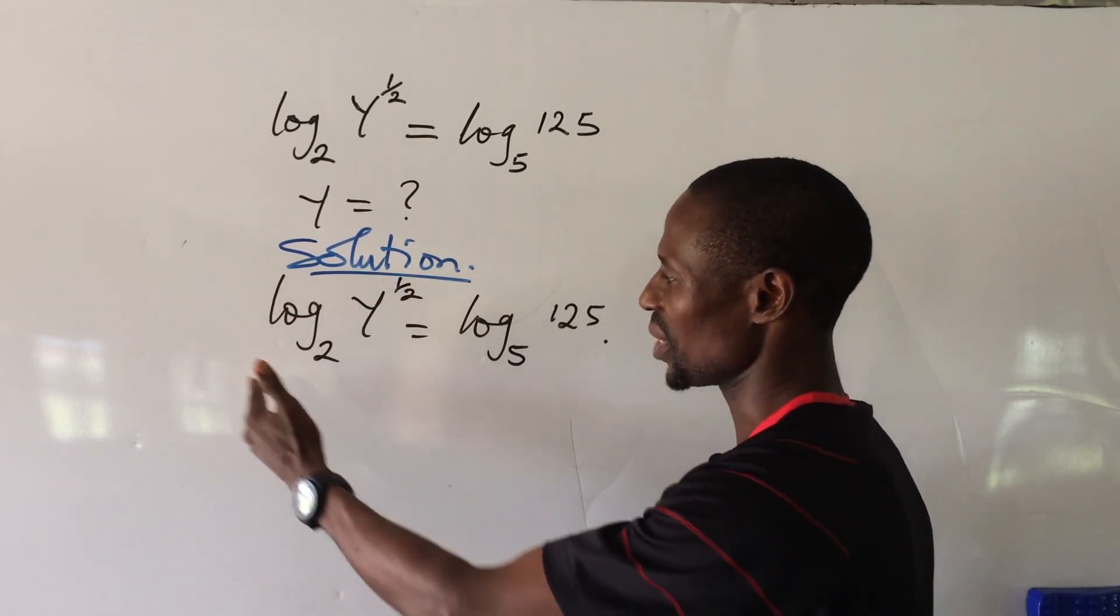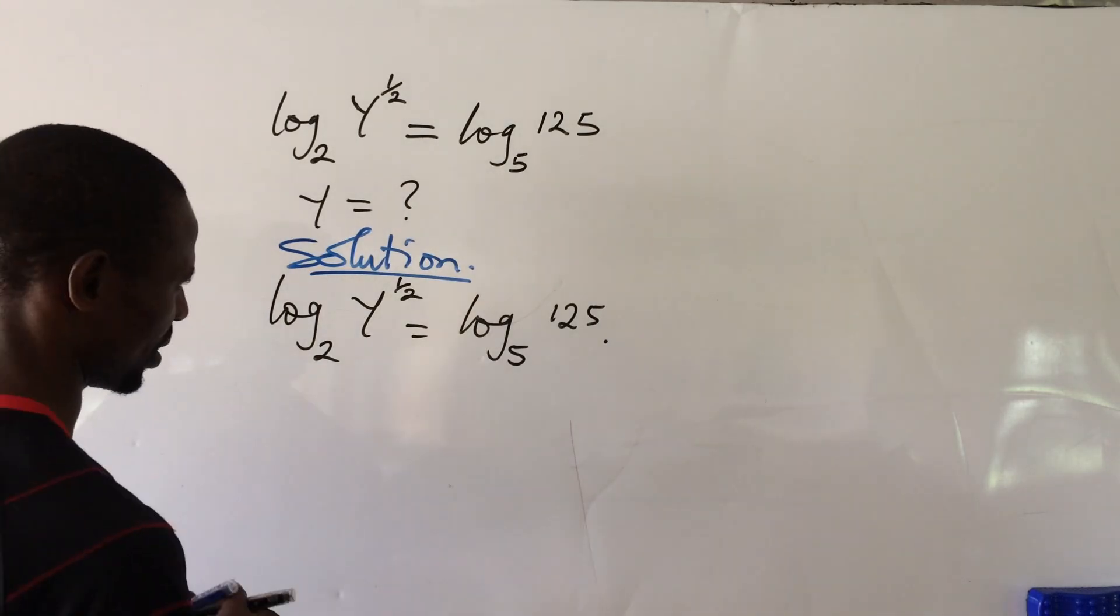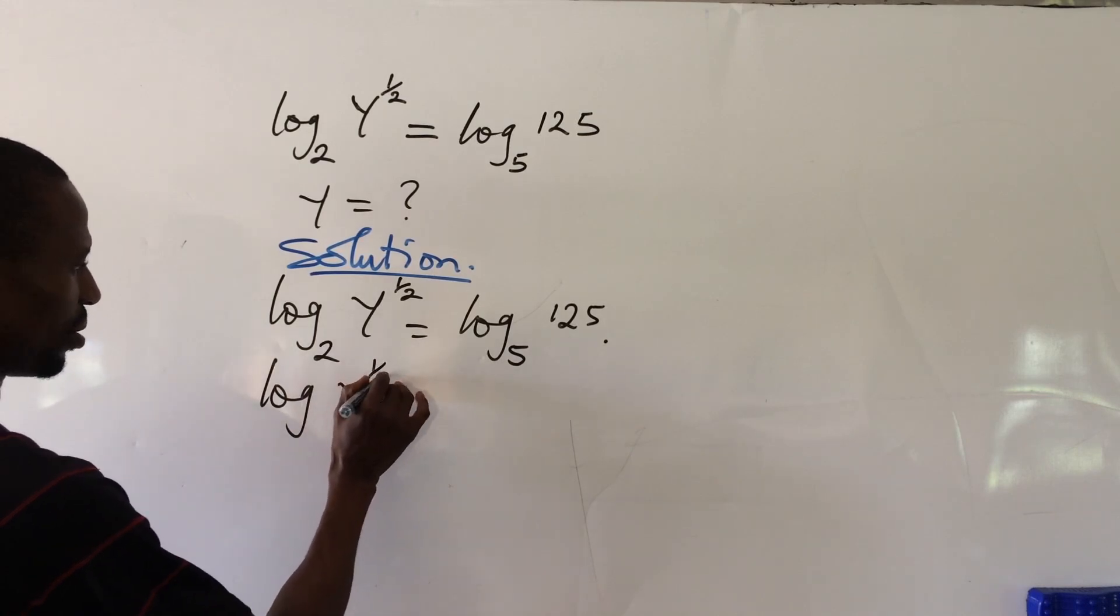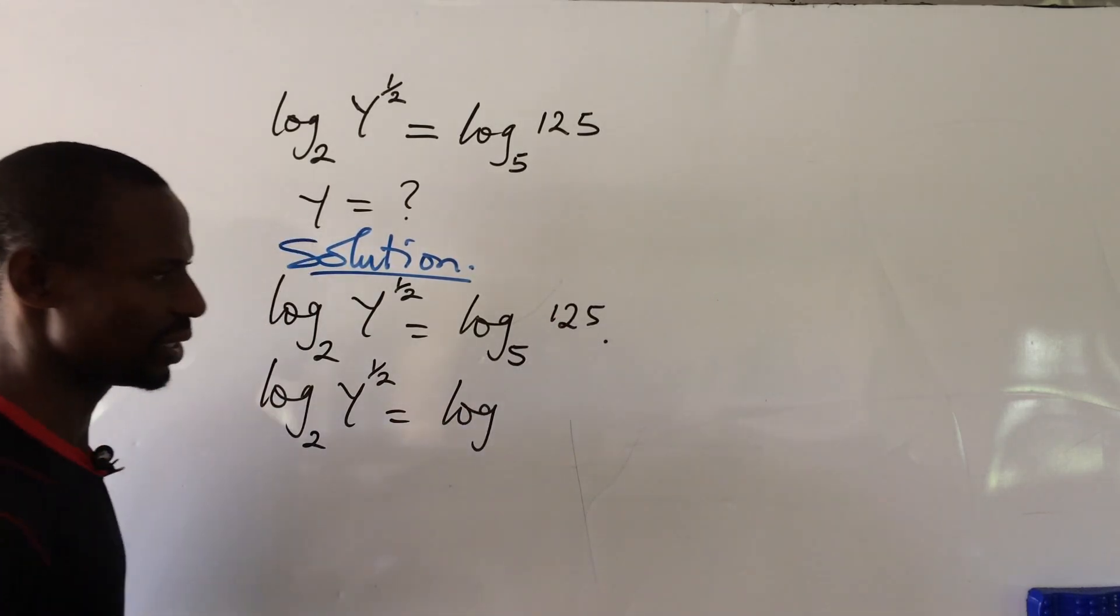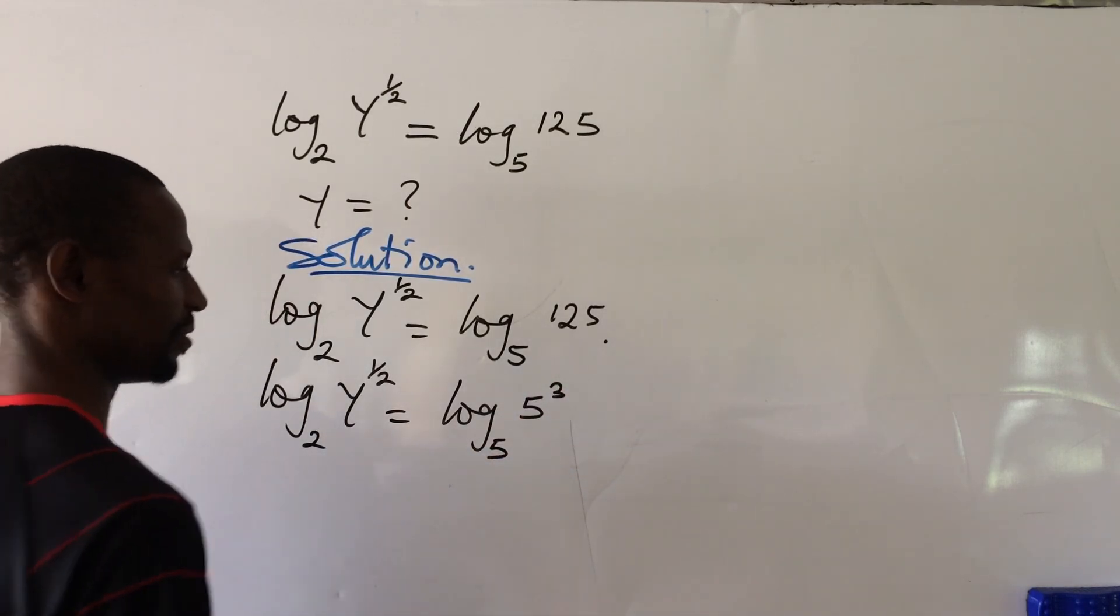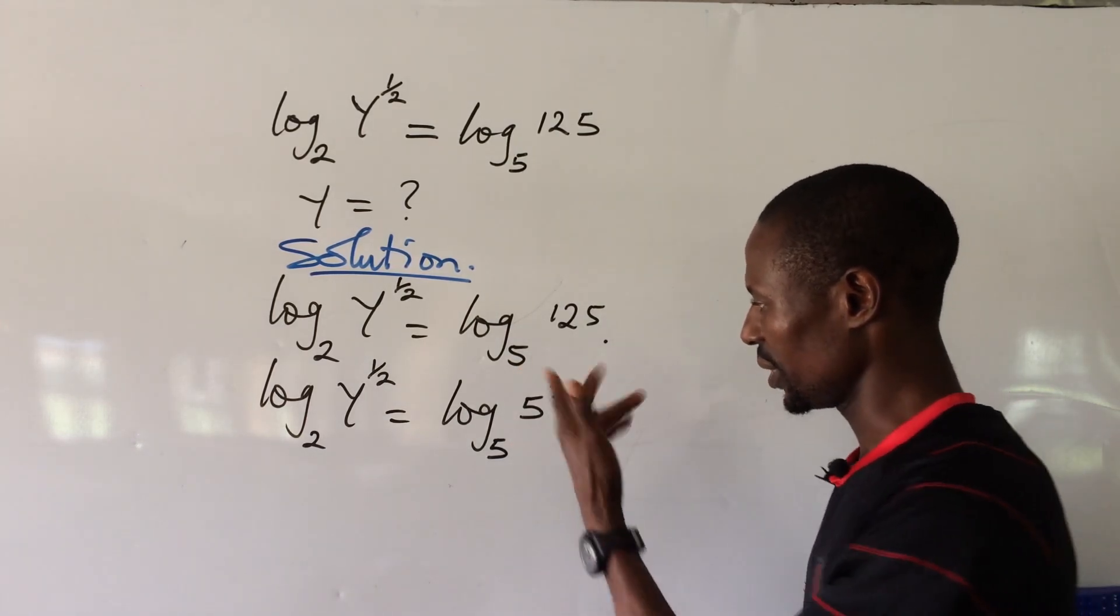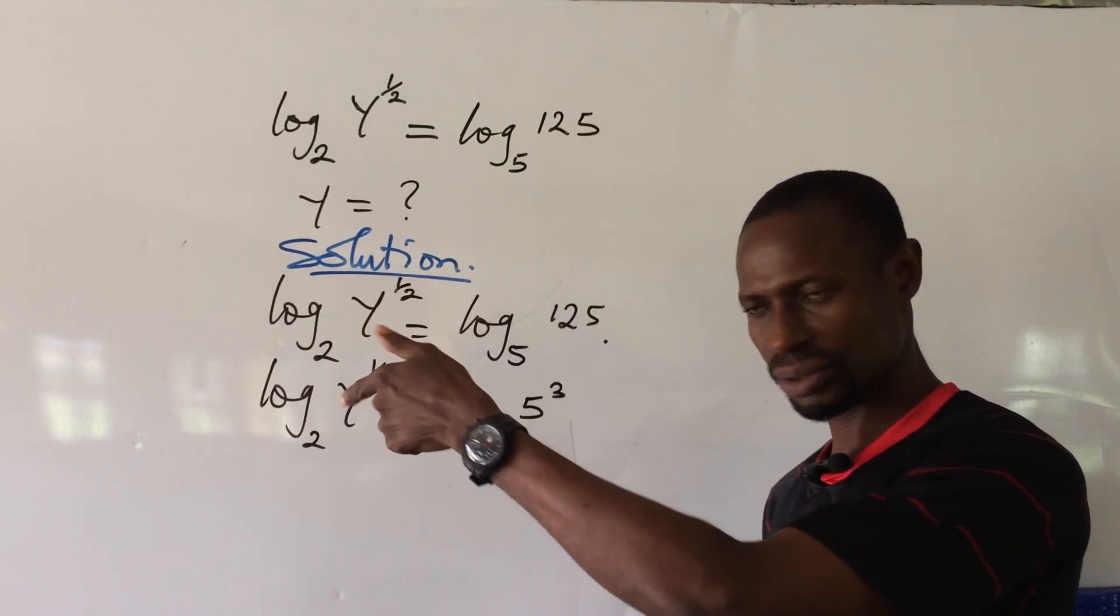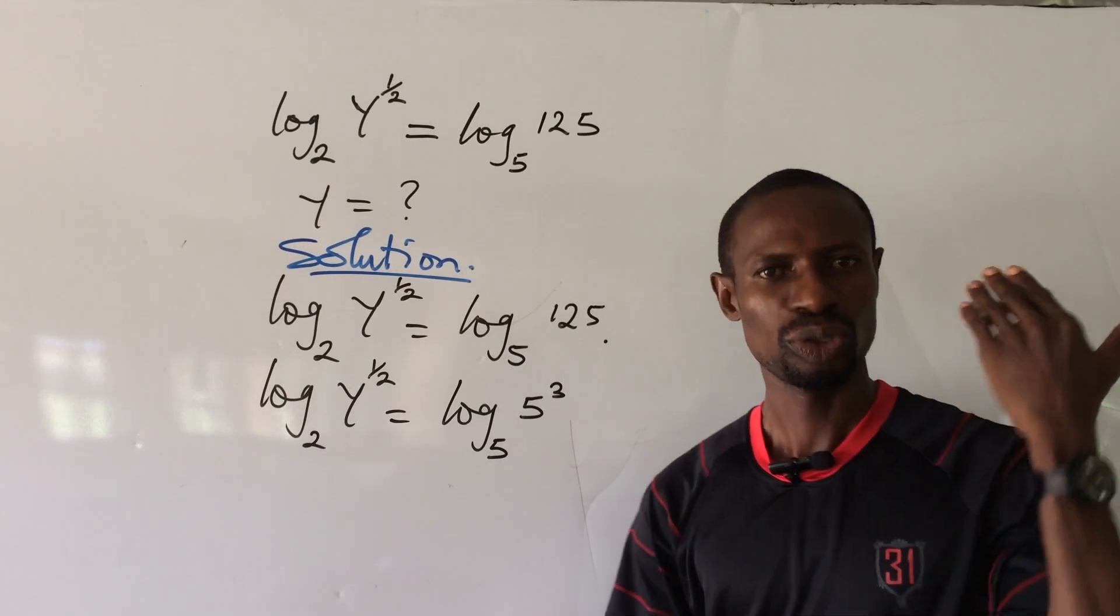So let's treat these two parts separately according to their base numbers. Let's take the right hand side of the equation first. This 125 can also be written as 5 to the power of 3. We're bringing 5 because when we think of a number to put in place of 125 raised to a particular power to give us 125, that number is 5. So 5 times 5 gives us 25, times another 5 gives us 125.